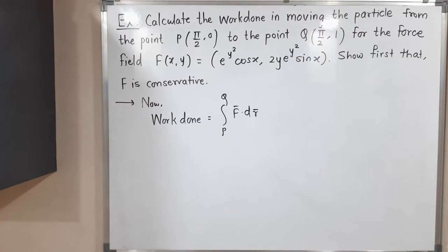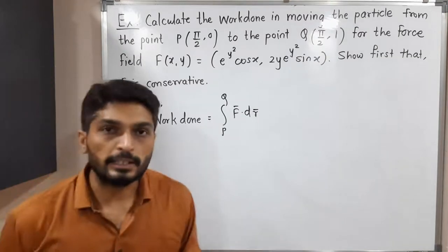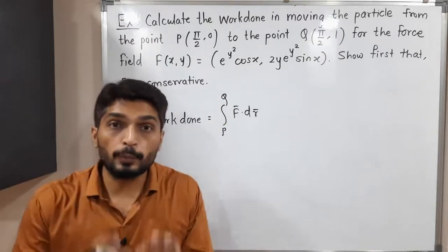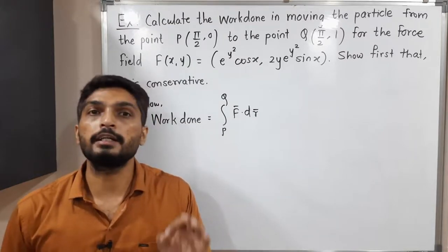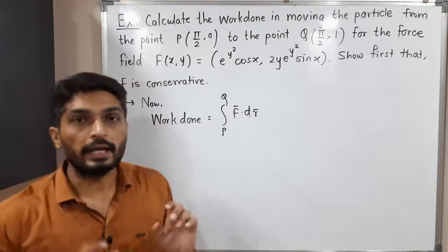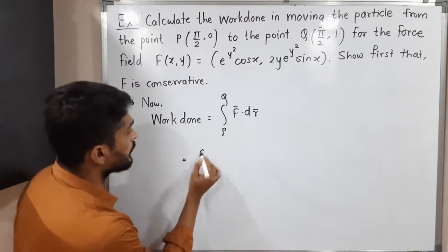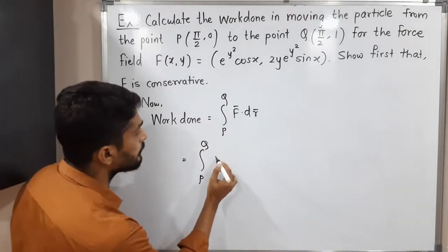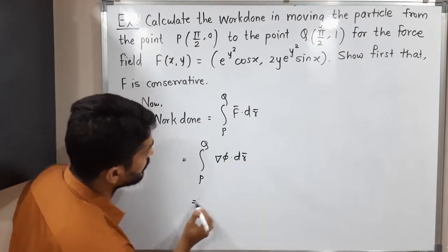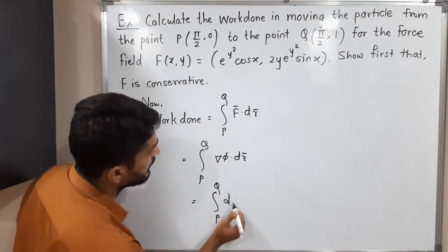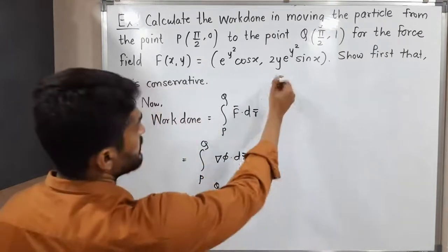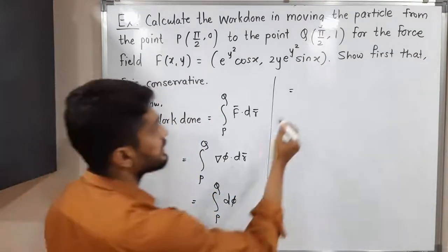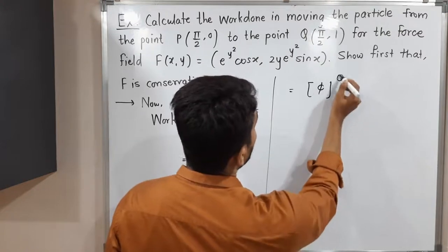Now we are going to find work done. The formula for work done is the line integral of F bar·dr bar from point P to Q. We have already proved F bar is conservative, so the line integral is independent of path and depends only on end points. This equals ∫ del φ·dr bar = ∫dφ = φ evaluated from P to Q.